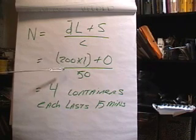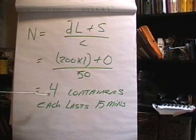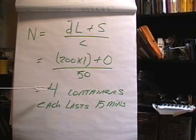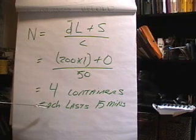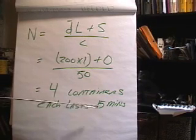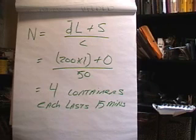This works out to 200 over 50, which equals four. So four containers are necessary to float between those two processes, and each one cycles approximately every 15 minutes.